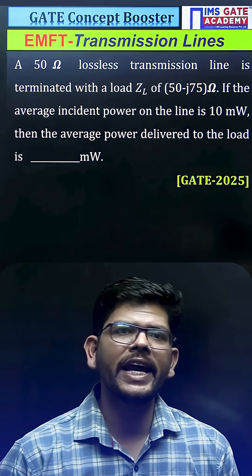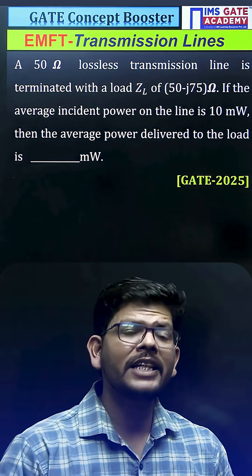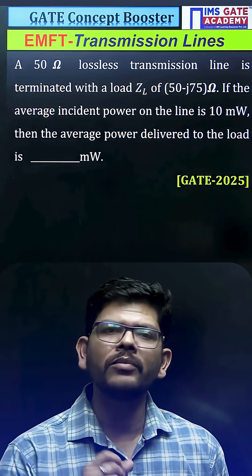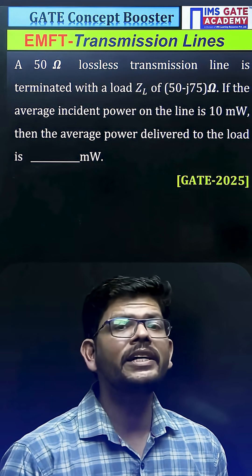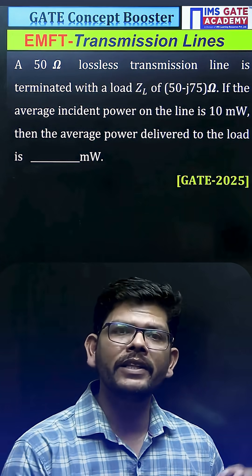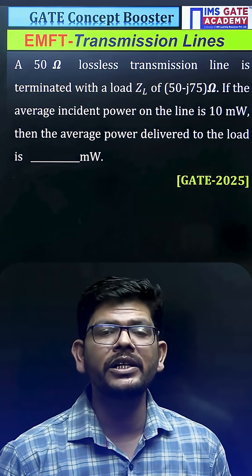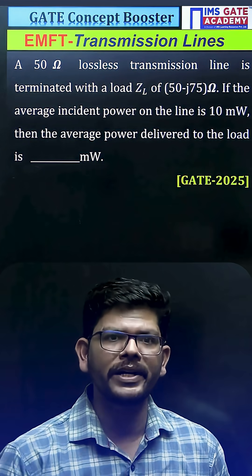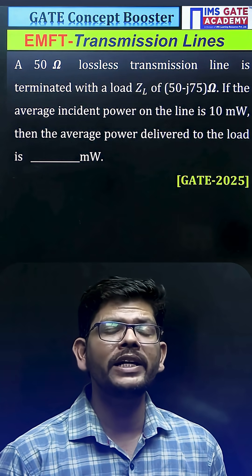Hello everyone, can you solve this GATE question from year 2025 from the subject EMFT on transmission lines? You have been given the characteristic impedance of the transmission line and the load impedance. What you have to calculate is the power delivered to the load, and the incident power is given in milliwatts.